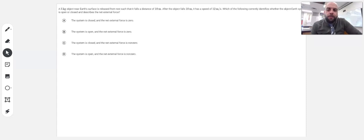So we've got a five kilogram object near Earth's surface that's released from rest such that it falls a distance of 10 meters. After the object falls 10 meters, it has a speed of 12 meters per second. Which of the following correctly identifies whether the object Earth system is open or closed and describes the net external force?